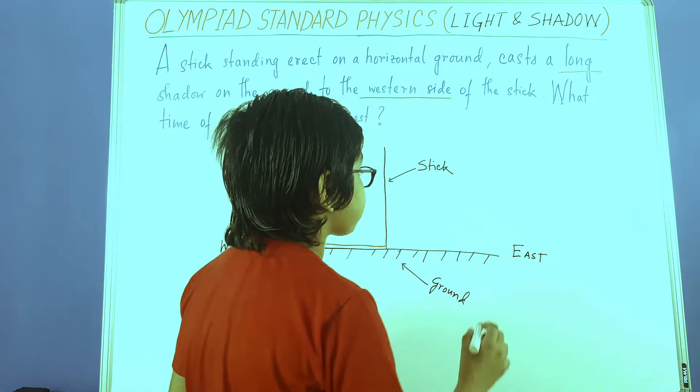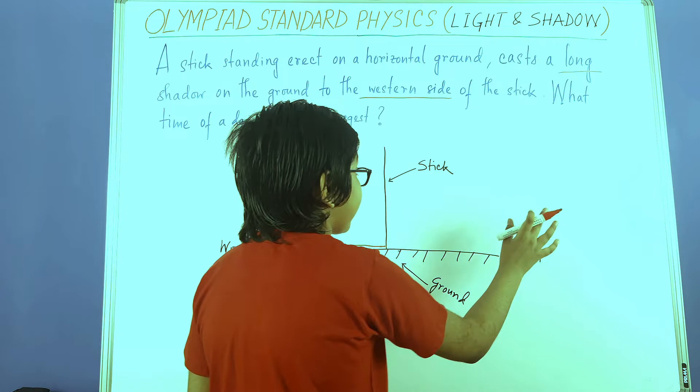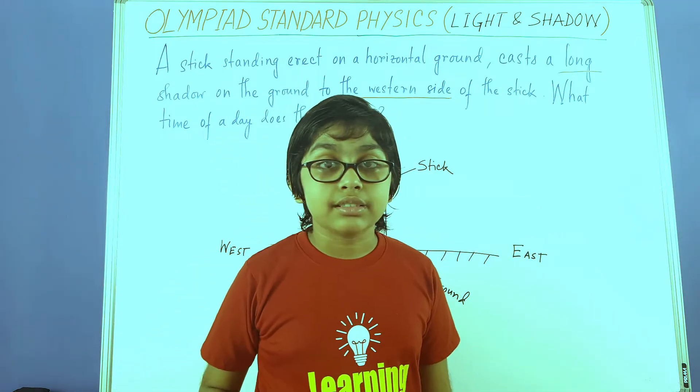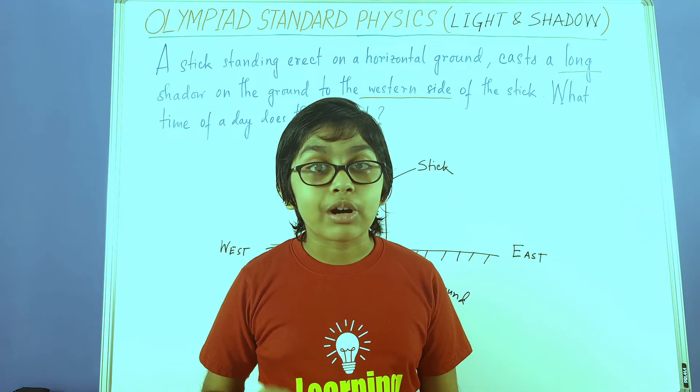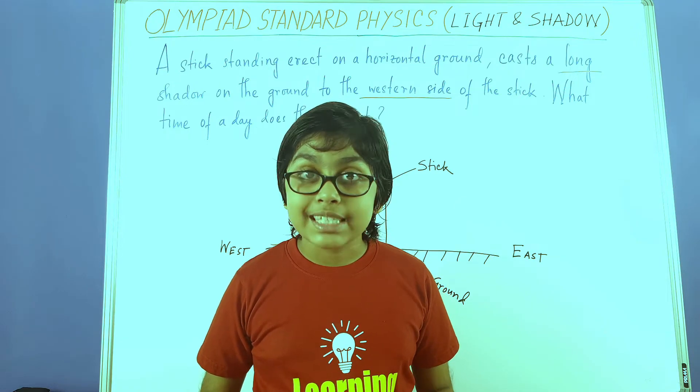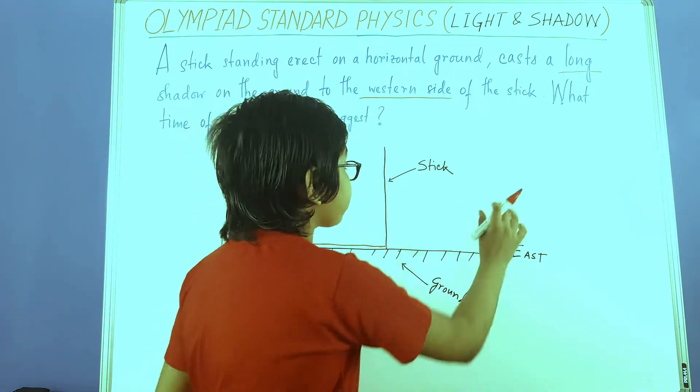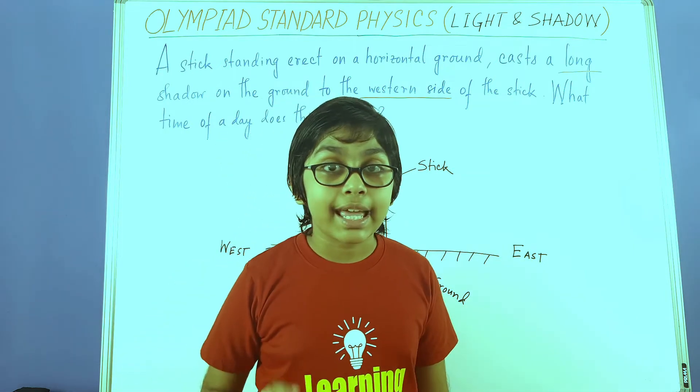Now, here the light source is the sun. There is a very important concept based on the position of the light source. Here we found that the light source was in the east.